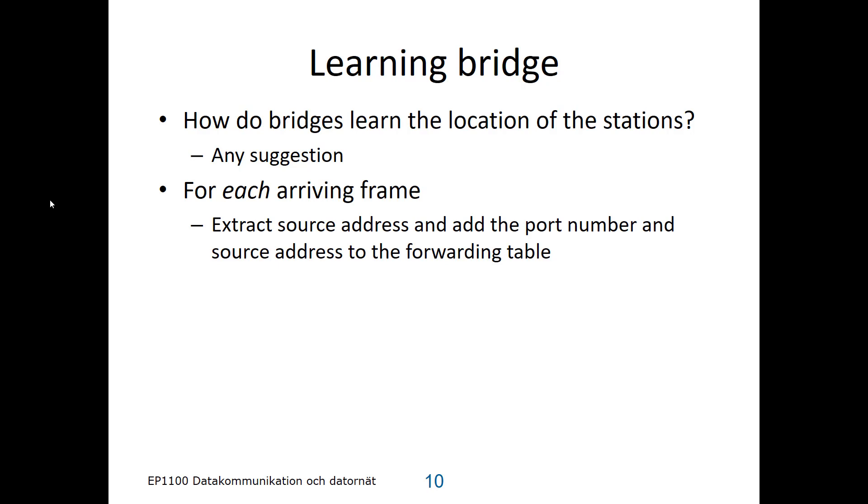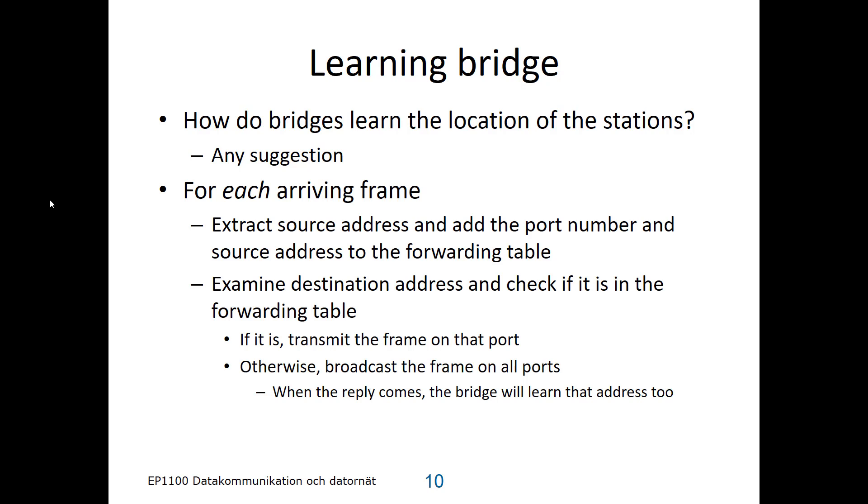Once it has received a frame, it will examine the destination address and check if it's already in the forwarding table. If it is, it will transmit the frame on that port which is listed in the table. Otherwise, it doesn't know where the frame should go, so it sends it on all ports except the one where the frame came in.